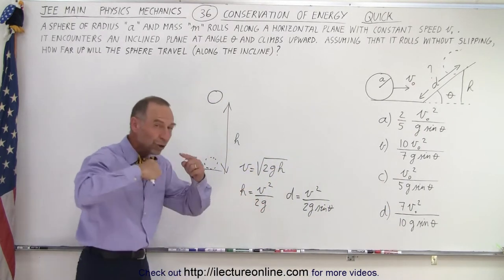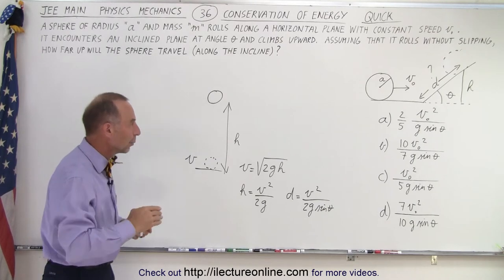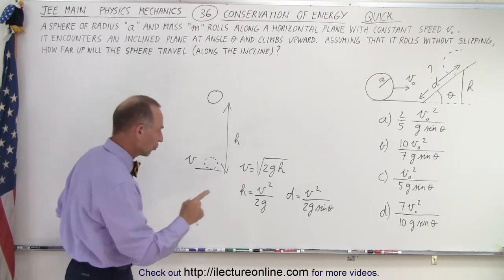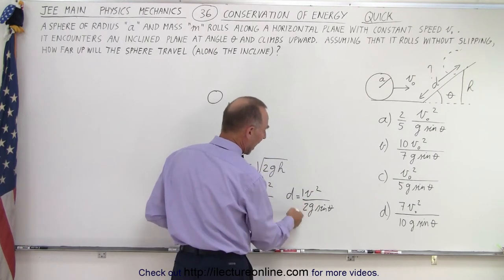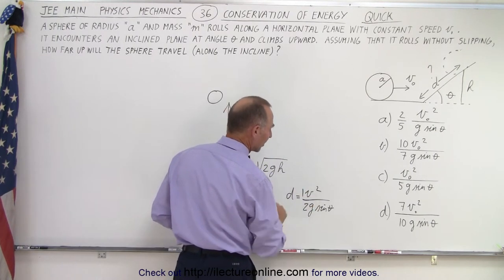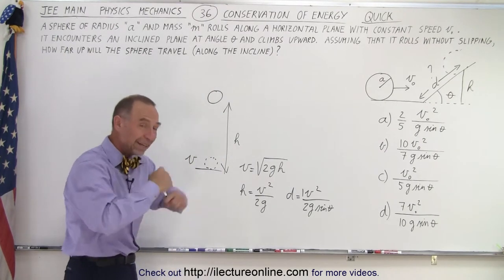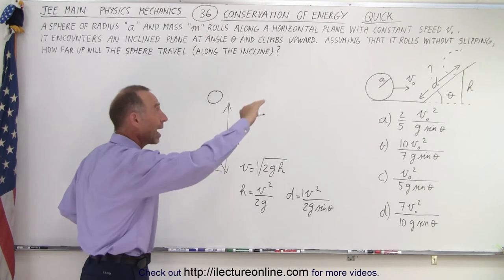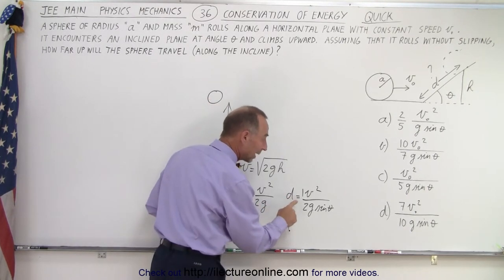Now, notice that if we do not take into account the rotational kinetic energy, it will go a certain height or a certain distance, and what we end up with is one half v squared over g sine theta. When we take into account the rotational kinetic energy, it will actually go higher.